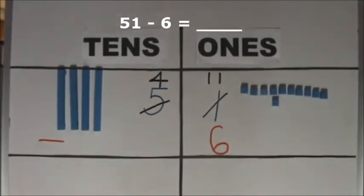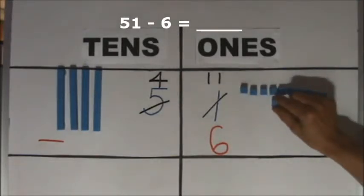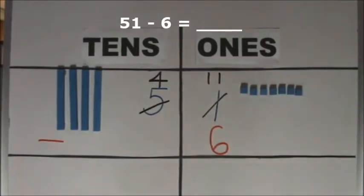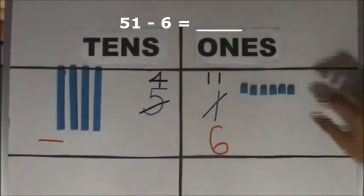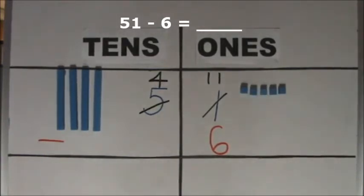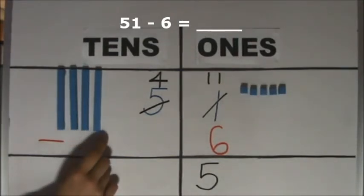Now we have enough ones to take away 6 ones. Take away 6 ones from 11 ones. Take away 1, 2, 3, 4, 5, 6. How many ones do we have left? We have 5 ones left. How many tens do we have left? We have 4 tens left.